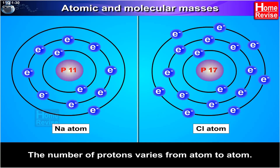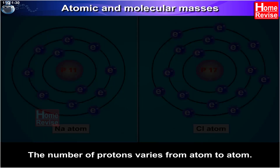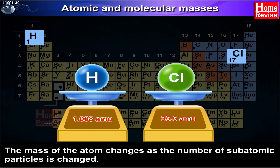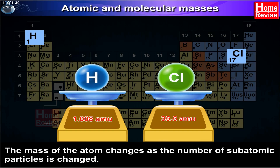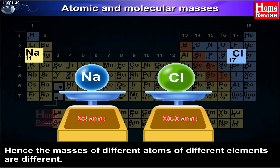The number of protons varies from atom to atom. The mass of the atom changes as the number of subatomic particles is changed. Hence, masses of different atoms of different elements are different.